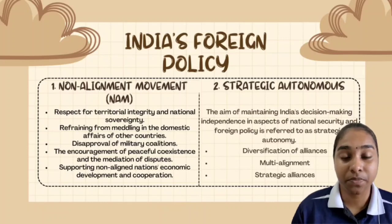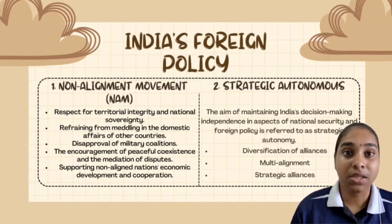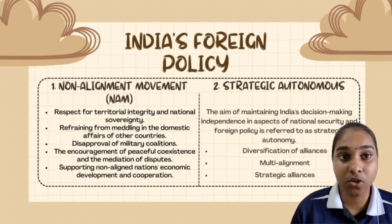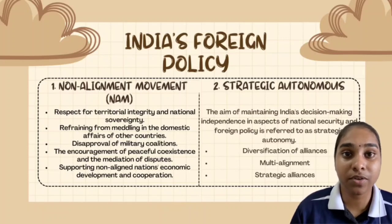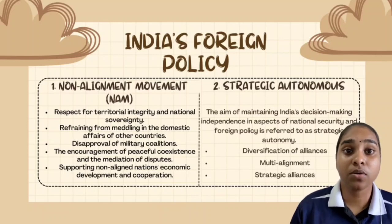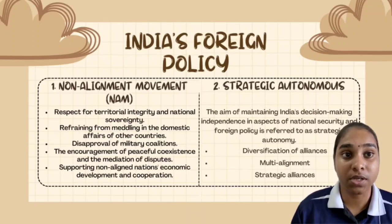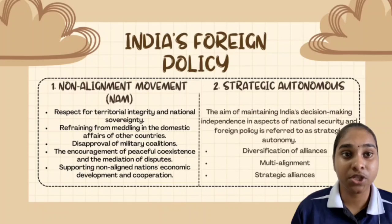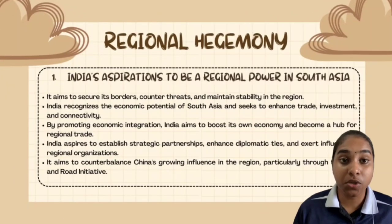Today India follows a policy of multi-alignment, seeking partnerships with various countries across different regions. This approach enables India to diversify its alliances, enhance economic cooperation, and maintain strategic balance. However, non-alignment and strategic autonomy present challenges — balancing competing interests, managing geopolitical complexities, and addressing regional conflicts requires careful diplomacy and skillful maneuvering. In conclusion, India's non-alignment movement and strategic autonomy have been fundamental pillars of its foreign policy, providing the flexibility to engage with multiple partners and pursue independent interests in the global arena.